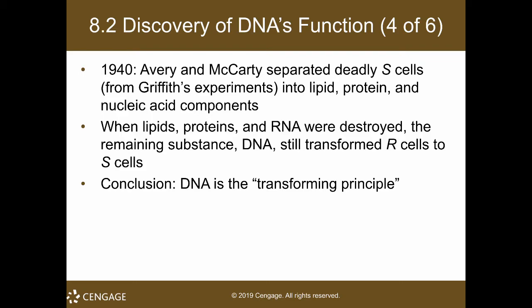In the 1940s, Oswald Avery and McLean McCarty separated the deadly S cells into lipids, proteins, and nucleic acid components to isolate the transforming agent — what transformed the benign R strain into the malignant S strain. When lipids, proteins, and RNA were destroyed, the remaining substance, which was DNA, still transformed R cells to the S strain. Their conclusion was that DNA is the transforming principle.